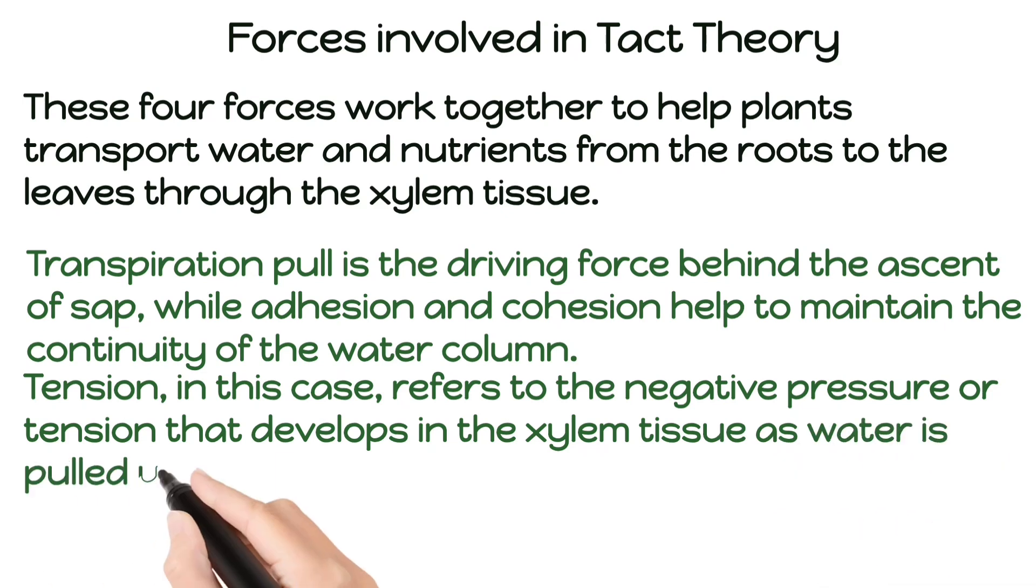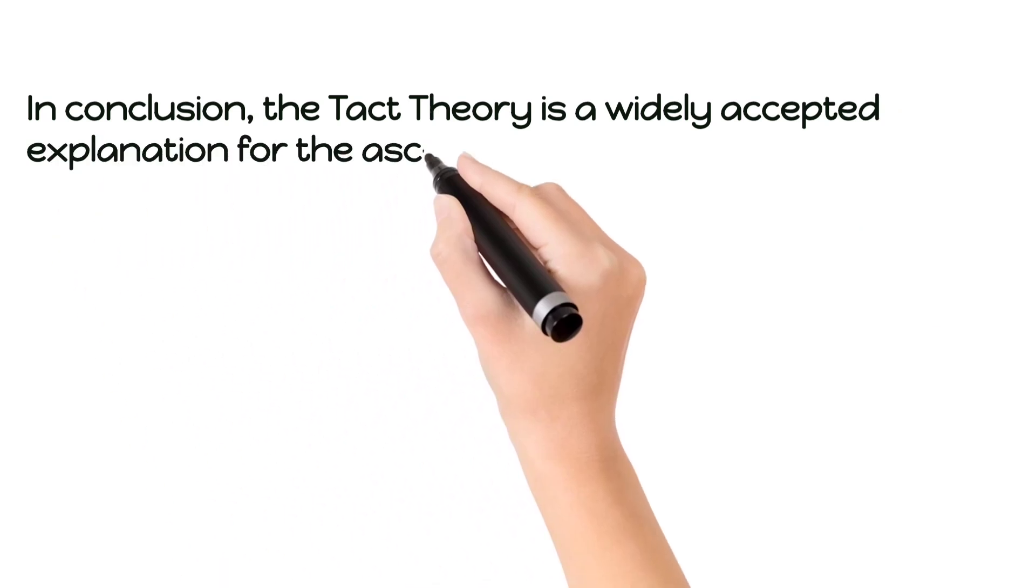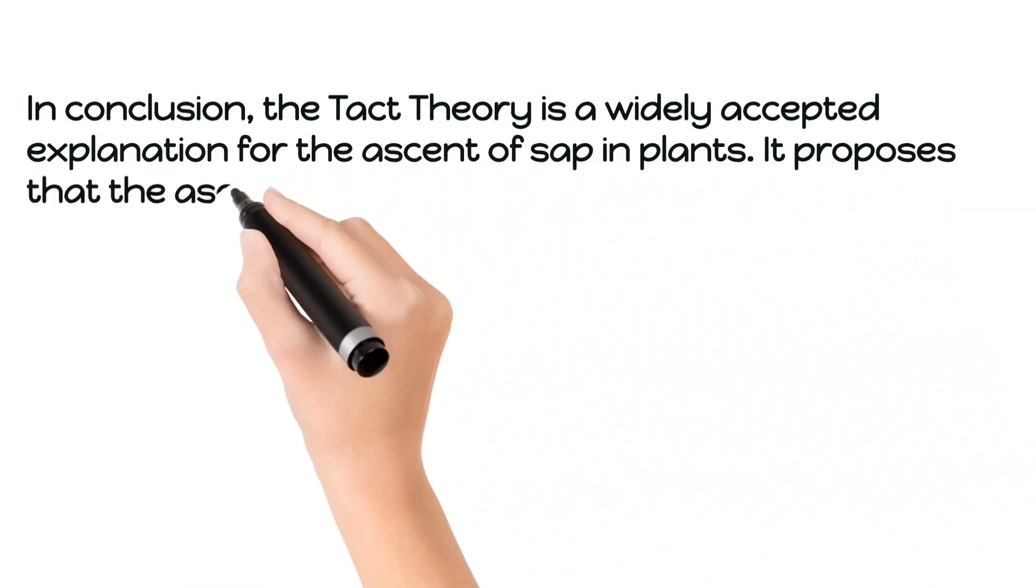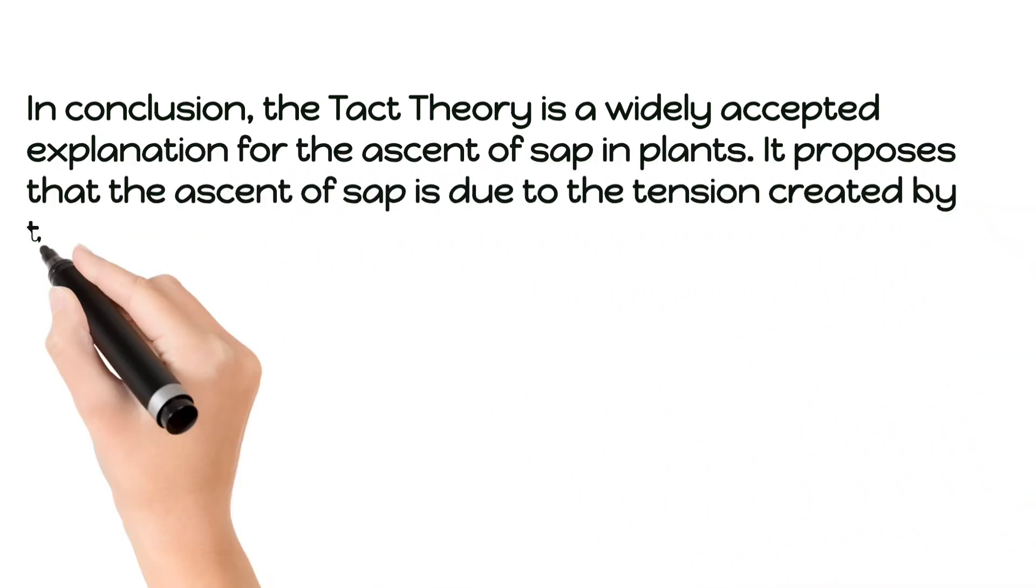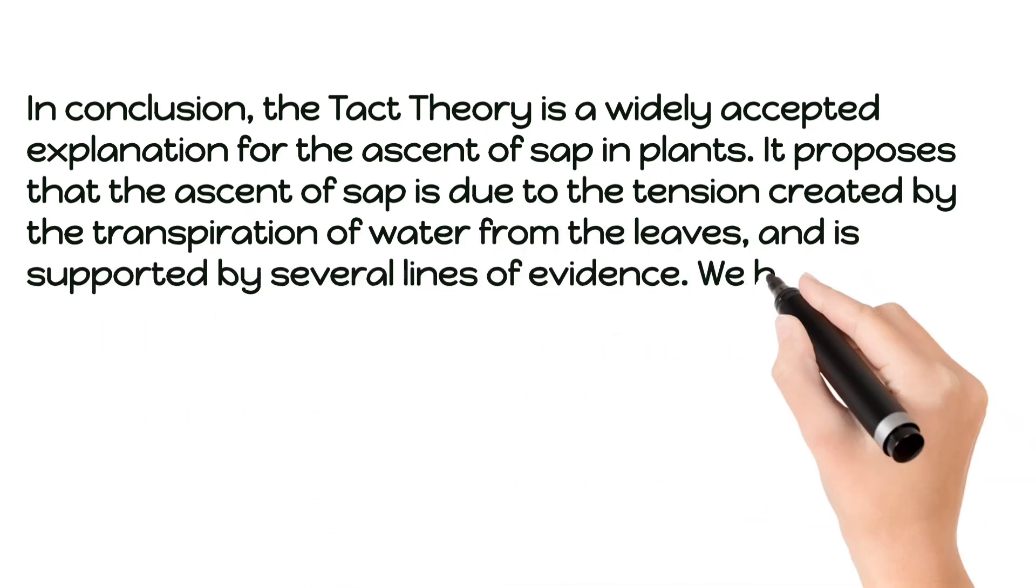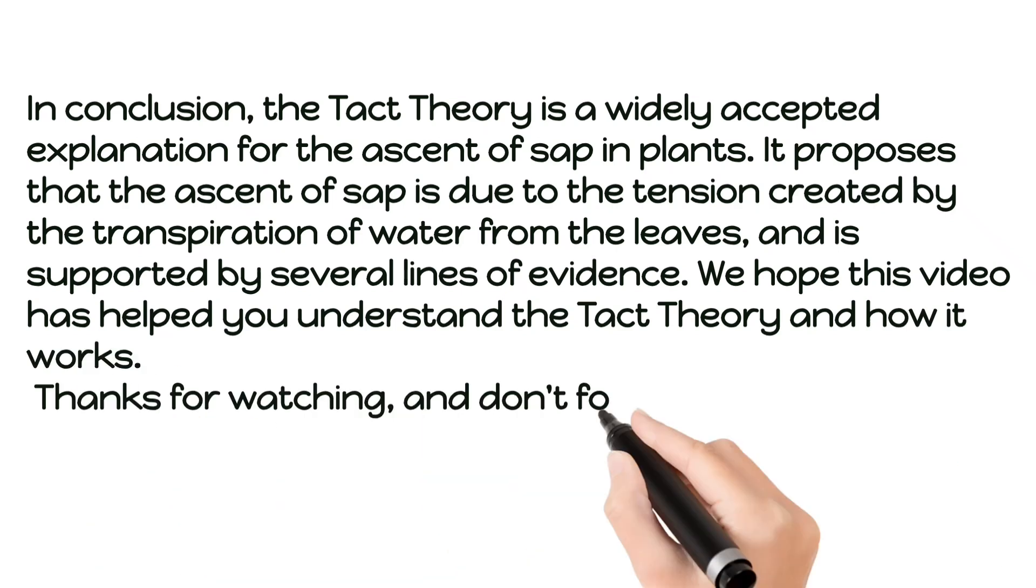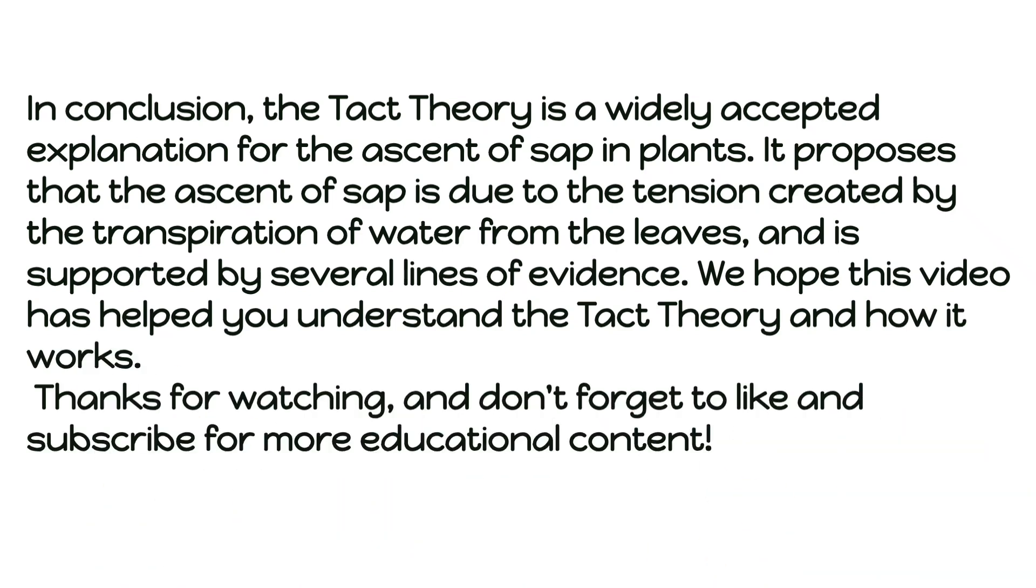In conclusion, the TAC theory is a widely accepted explanation for the ascent of sap in plants. It proposes that the ascent of sap is due to the tension created by the transpiration of water from the leaves and is supported by several lines of evidence. We hope this video has helped you understand the TAC theory and how it works.